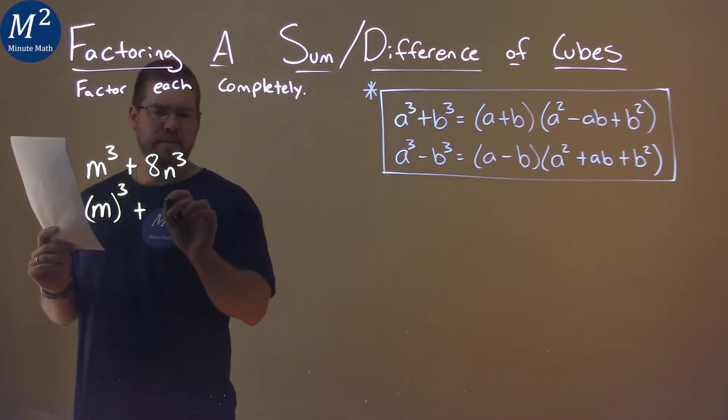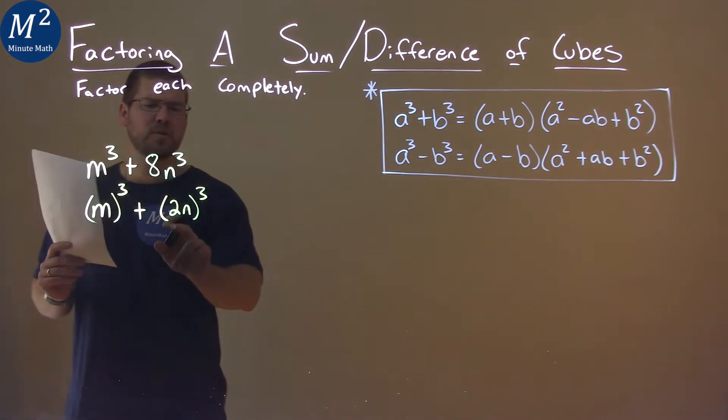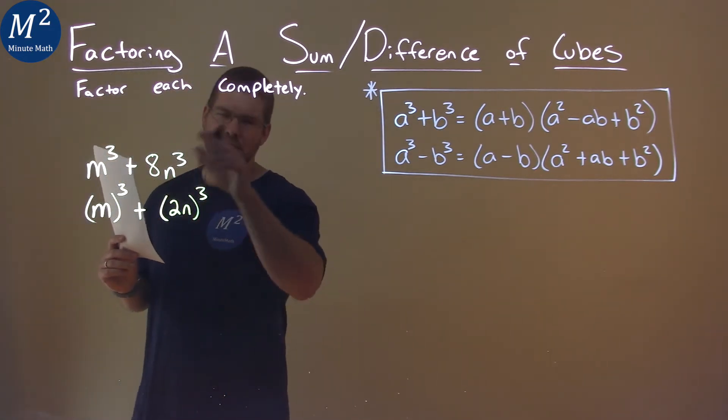8n cubed is a little tricky. We put a 2n here, all cubed. 2 cubed is 8, n cubed is n cubed.